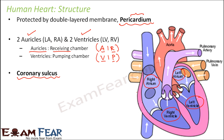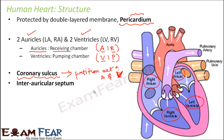The auricles are present on the top side and the ventricles are present on the bottom side. So this partition between auricles and ventricles is called the coronary sulcus — it is the partition between A (auricles) and V (ventricles).